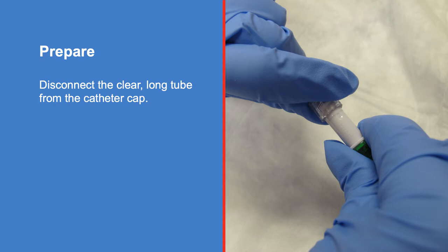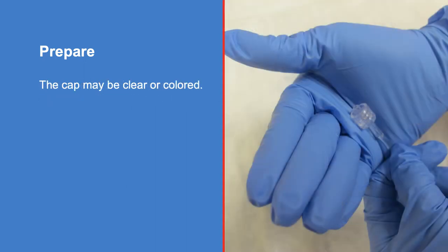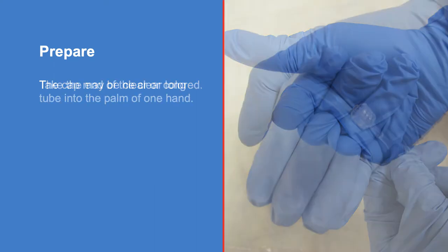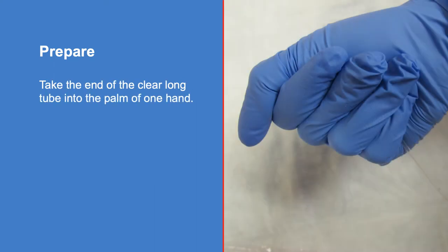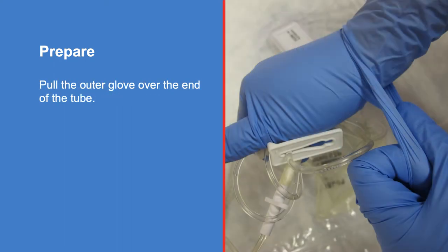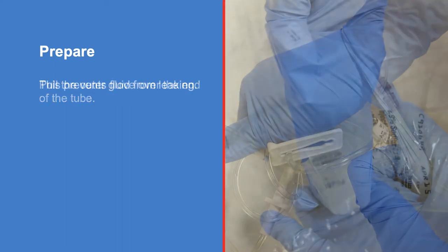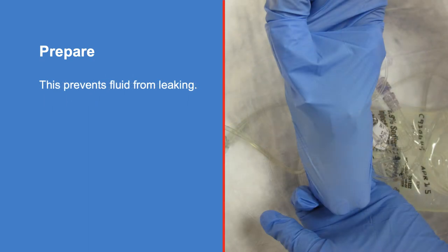Disconnect the clear long tube from the catheter cap. This line is connected to the used bag. The cap is connected to the needle in the port and may be clear or colored. Take the end of the clear long tube into the palm of one hand, then pull the outer glove over the end of the tube. This prevents fluid from leaking.